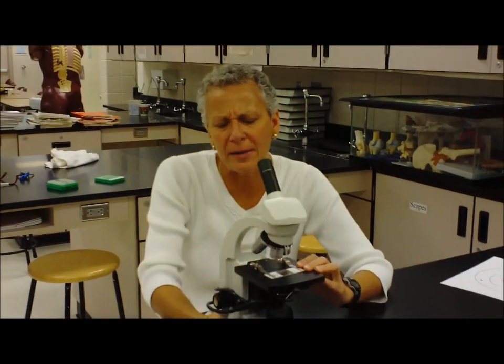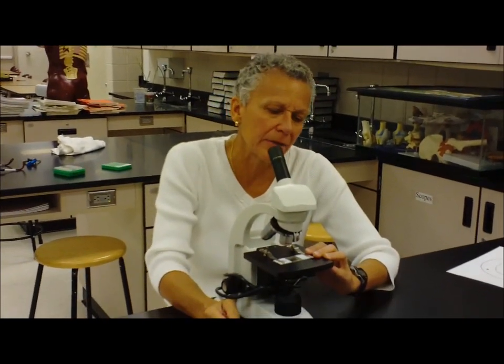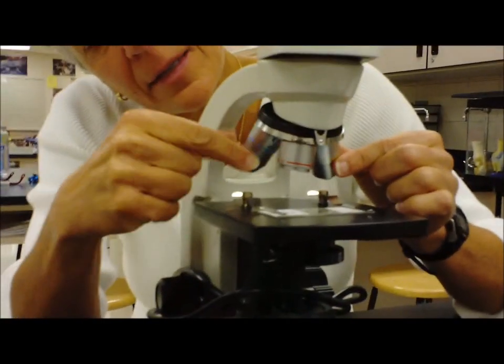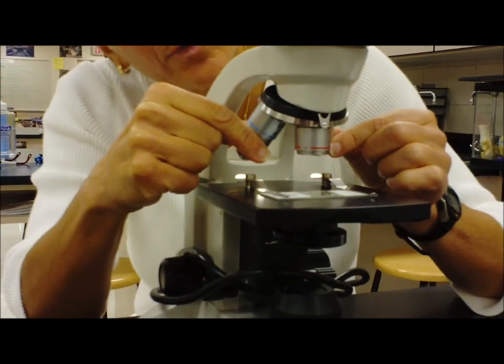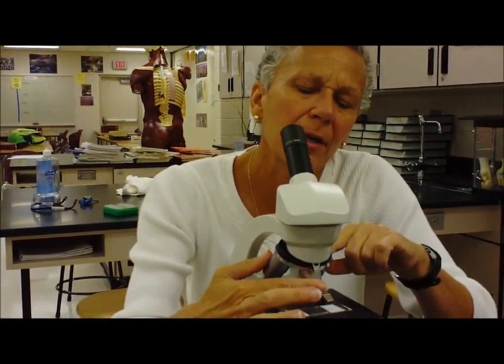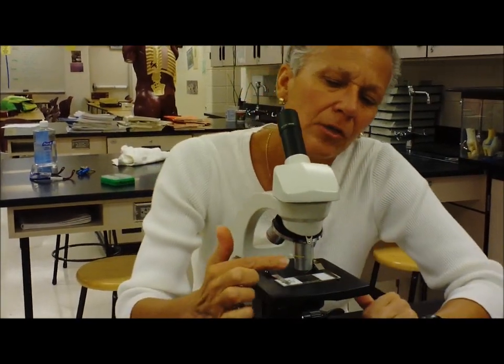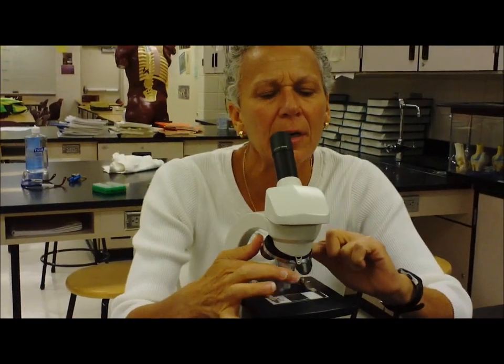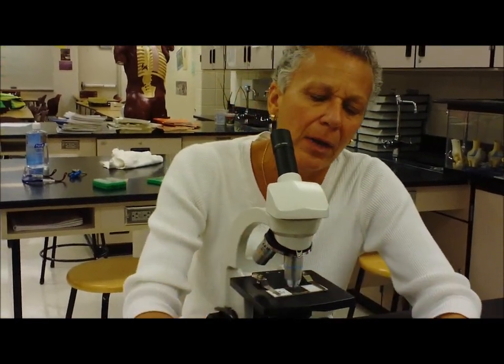First thing I want to do is find my sample under the scanning lens. And let's talk about what the three lenses we have are. The shortest one is the scanning lens, and you know it's in place when you hear kind of a little click. So I'm going to find my object here, turn the revolving nosepiece to look at the low power lens. And then once I've focused it here, then I'm going to switch to the high power lens.